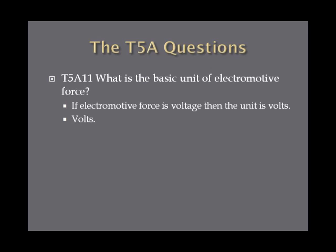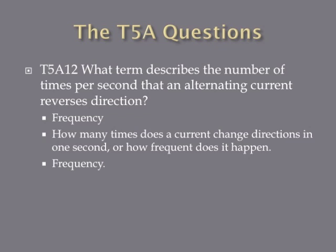What is the basic unit of electromotive force? If electromotive force is voltage, then it makes sense that the unit would be volts. Just remember that the basic unit of electromotive force, or voltage, is volts. What term describes the number of times per second that an alternating current reverses direction? The answer is frequency — how many times does a current change directions in one second, meaning how frequently does it happen. The answer is frequency.